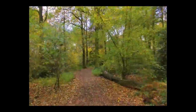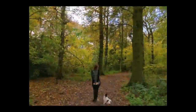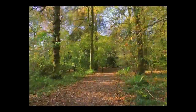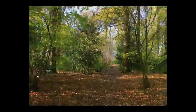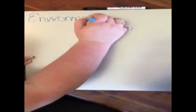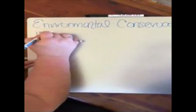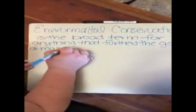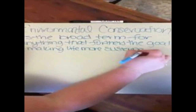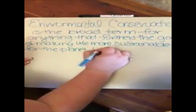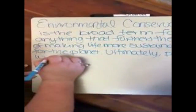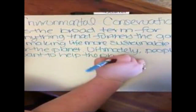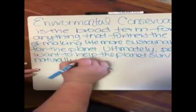Environmental conservation and land conservation in general is the broad term for anything that refers to the goal of making life more sustainable for the planet. Ultimately, people want to help the planet survive naturally and with no negative impact from the human race. Helping keep the planet healthy and safe is called conservation.